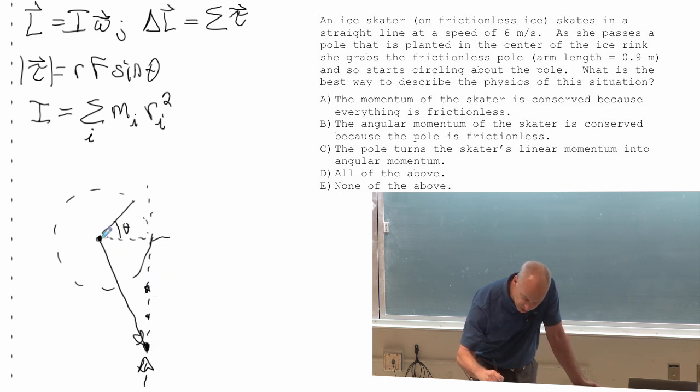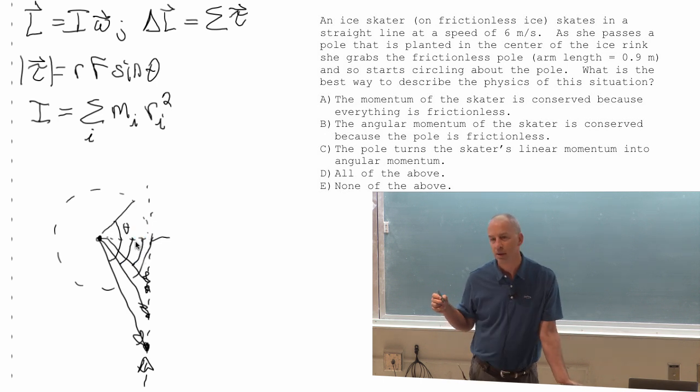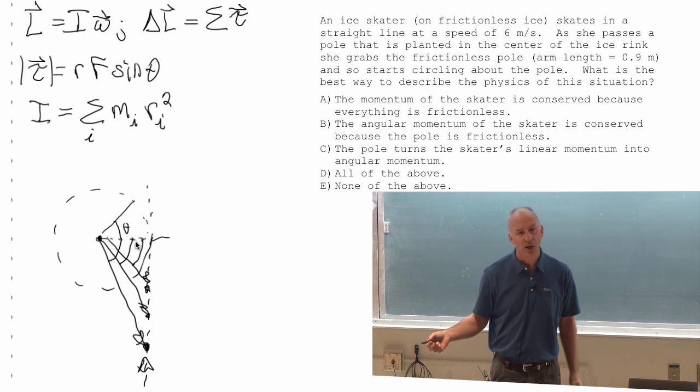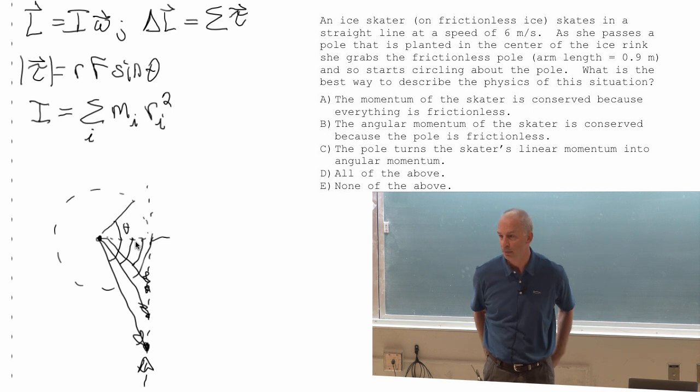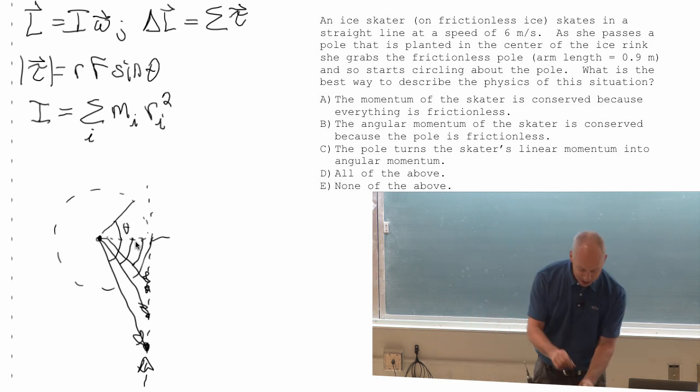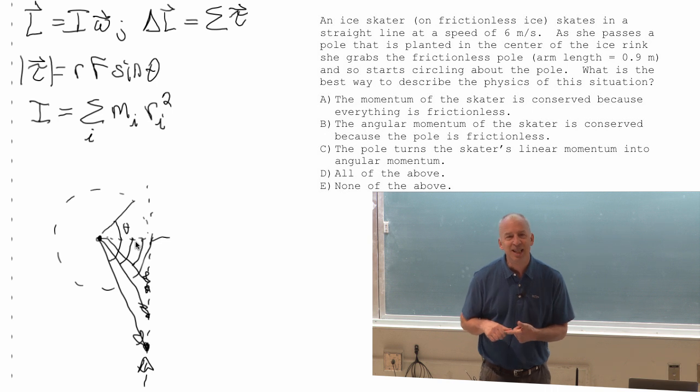So let me draw something and we'll measure the angles and try to decide if they're changing. Is that angle different than that one, different than that one? They are. Her angle with respect to that pivot point and what we call zero angle is changing the whole time.